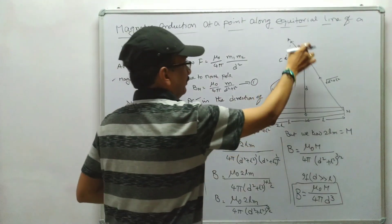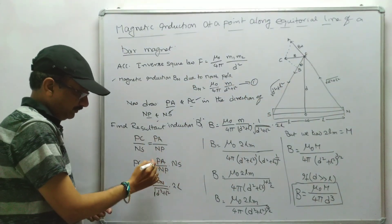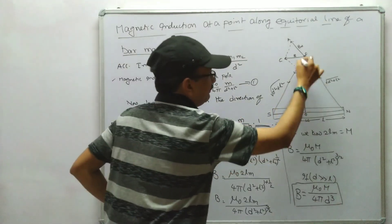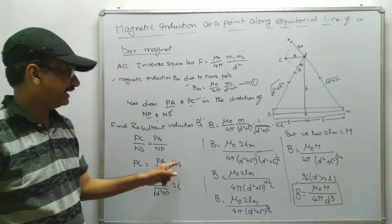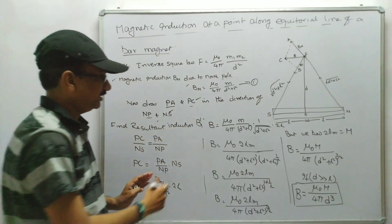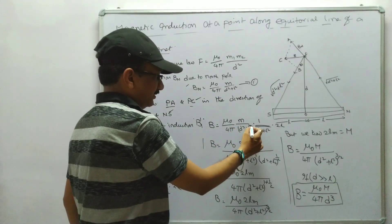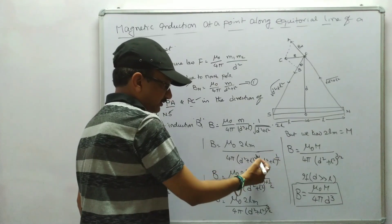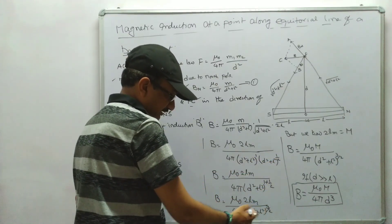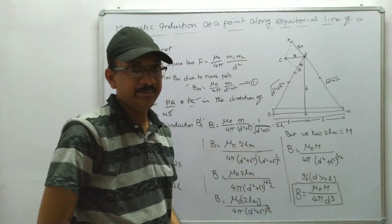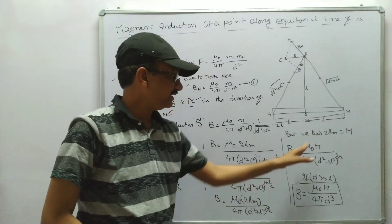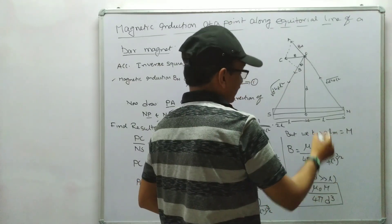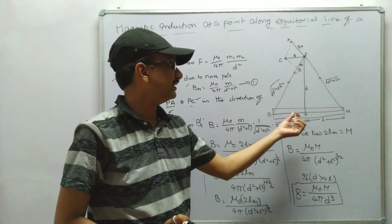The ratio PC/NS = PA/NP. PA means BN, NP means √(d² + L²), and NS is the length of the magnet, 2L. Substituting and combining exponents — d² + L² whole power 1 multiplied by d² + L² whole power ½ gives (d² + L²)^(3/2). Taking 2Lm as the magnetic moment M, we get the final equation. Then, if d is very much greater than the length of the magnet, the length becomes negligible.